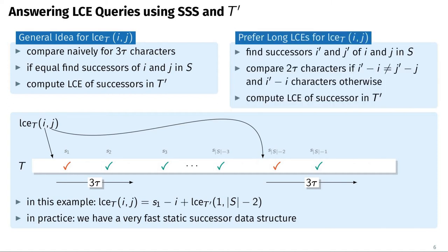In addition to this general idea, we also have a version that is faster for long LCE values, which we call the prefer-long version. Here, we first look for the successors of I and J, and if both successors have the same distance to I and J, we only have to scan naively up to that position. This saves many naive comparisons in practice. However, if the LCE is short, we find the mismatch early and the successor query result is never used, making the prefer-long version much slower for short LCE values, as we will see in our experiments.